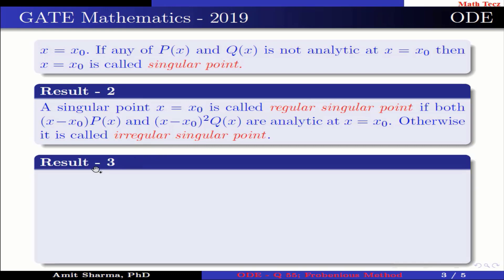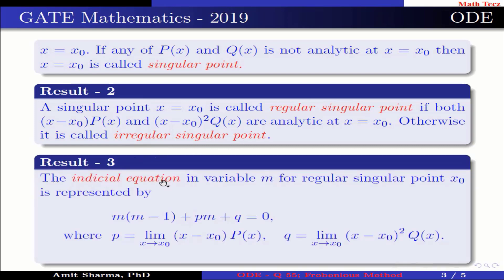Result number 3: The indicial equation in variable m for a regular singular point x₀ is represented by m(m − 1) + pm + q = 0, where p = lim(x → x₀) (x − x₀)p(x) and q = lim(x → x₀) (x − x₀)² q(x).